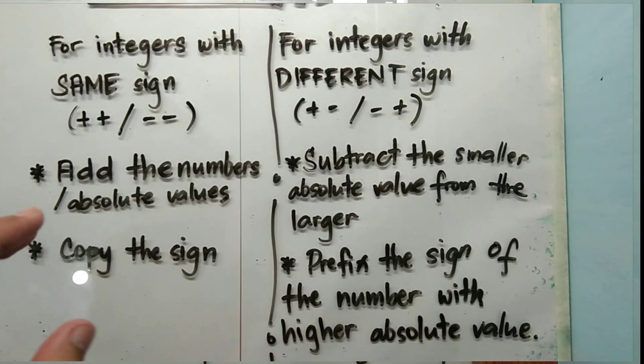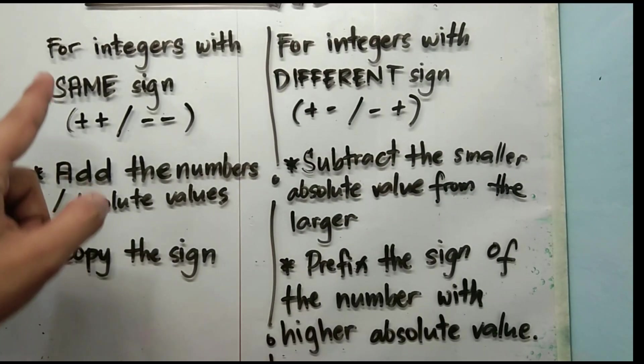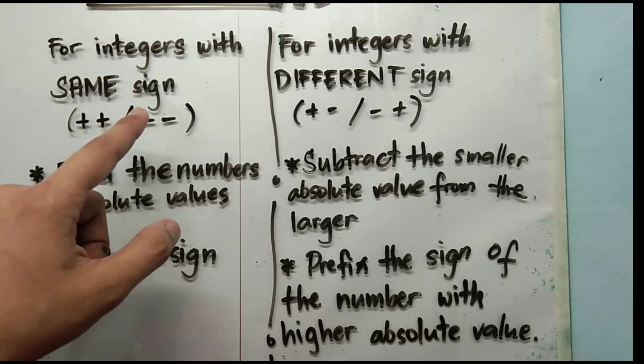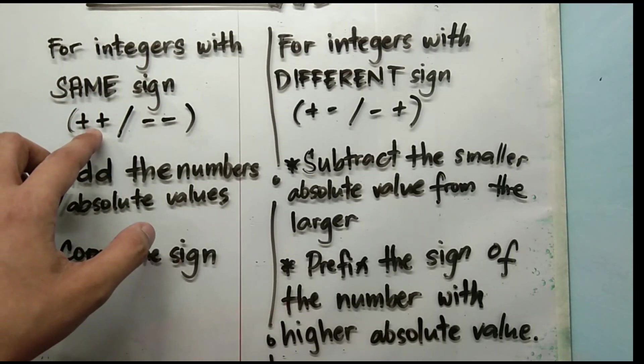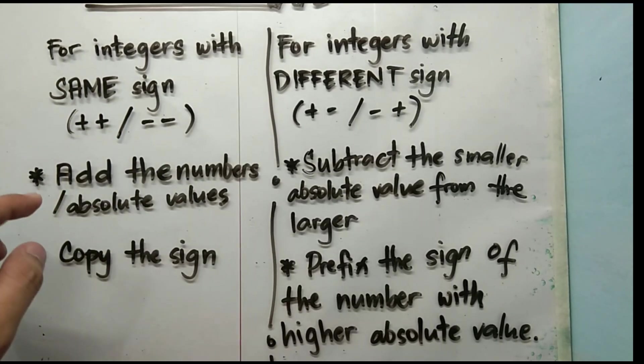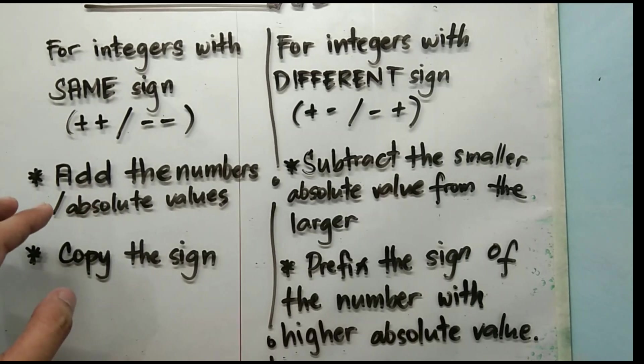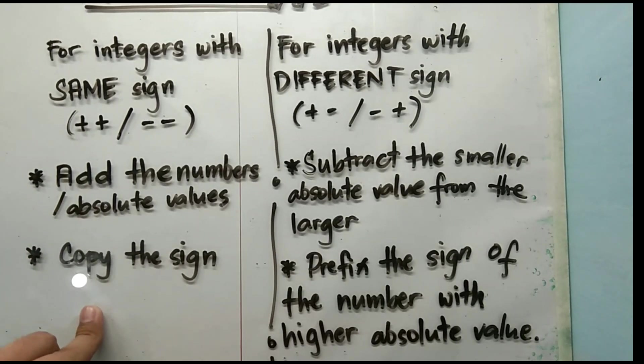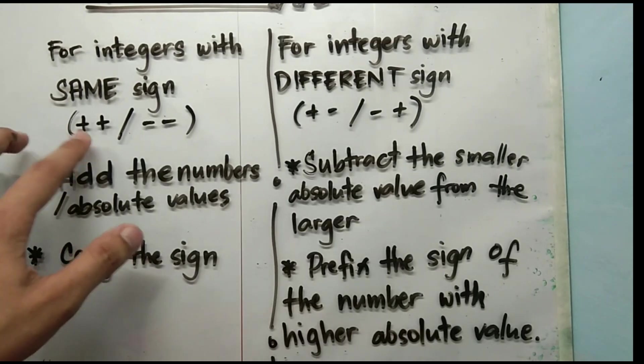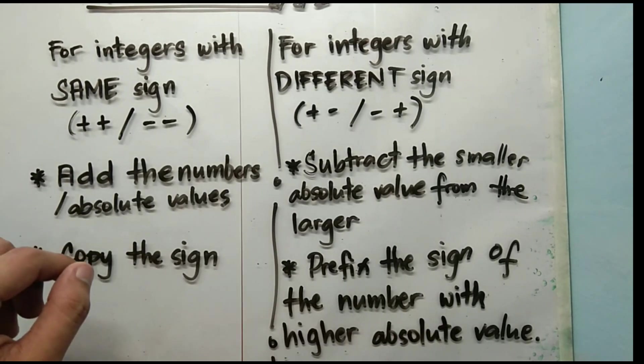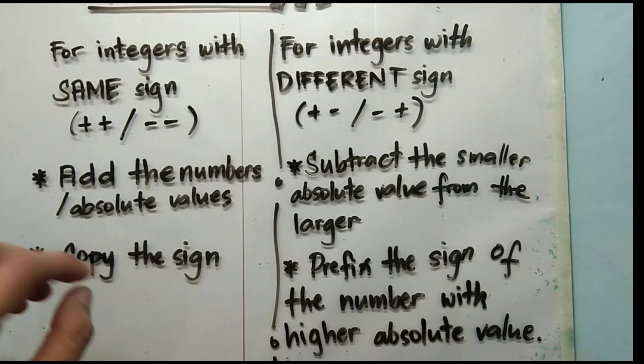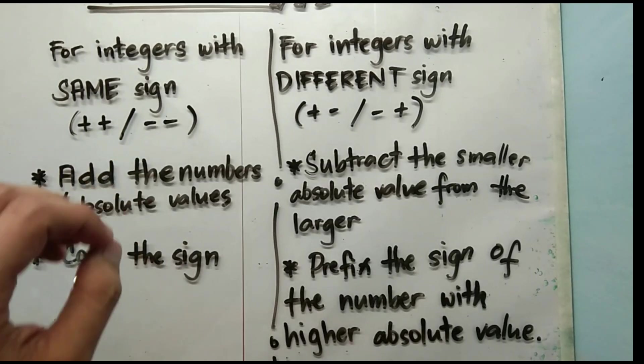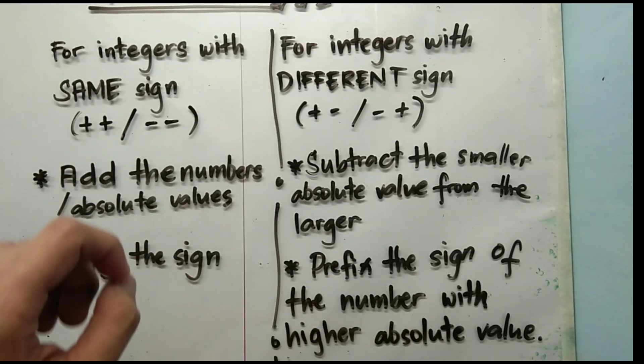Now, things to remember when adding integers. For integers with same sign, meaning both are positive or both are negative, we will simply add the numbers or their absolute values and then copy the sign. If the two integers are both positive, the sum should also be positive. If they are both negative, then the sum should also be negative.